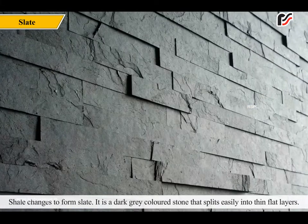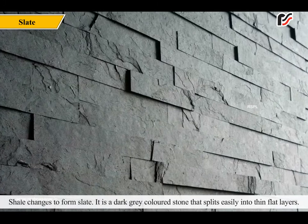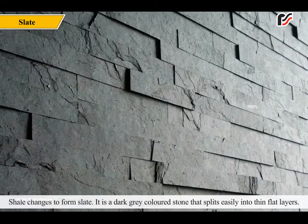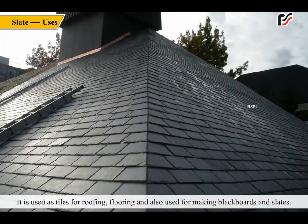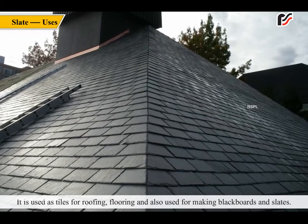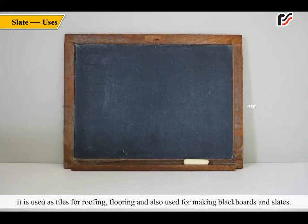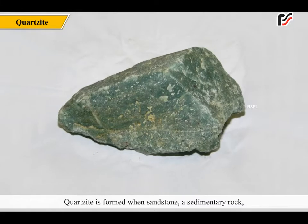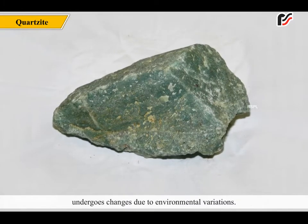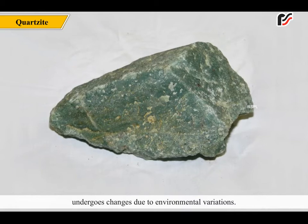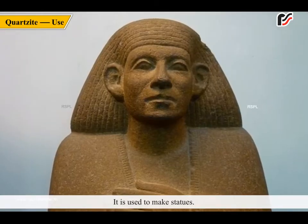Shale changes to form slate. It is a dark gray colored stone that splits easily into thin flat layers. It is used as tiles for roofing, flooring, and also used for making blackboards and slates. Quartzite is formed when sandstone, a sedimentary rock, undergoes changes due to environmental variations. It is used to make statues.